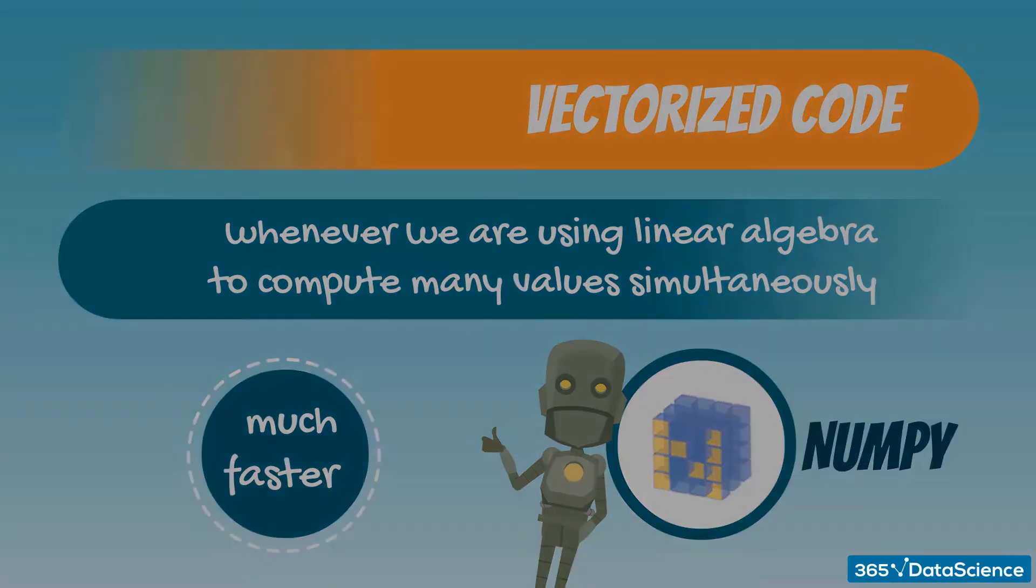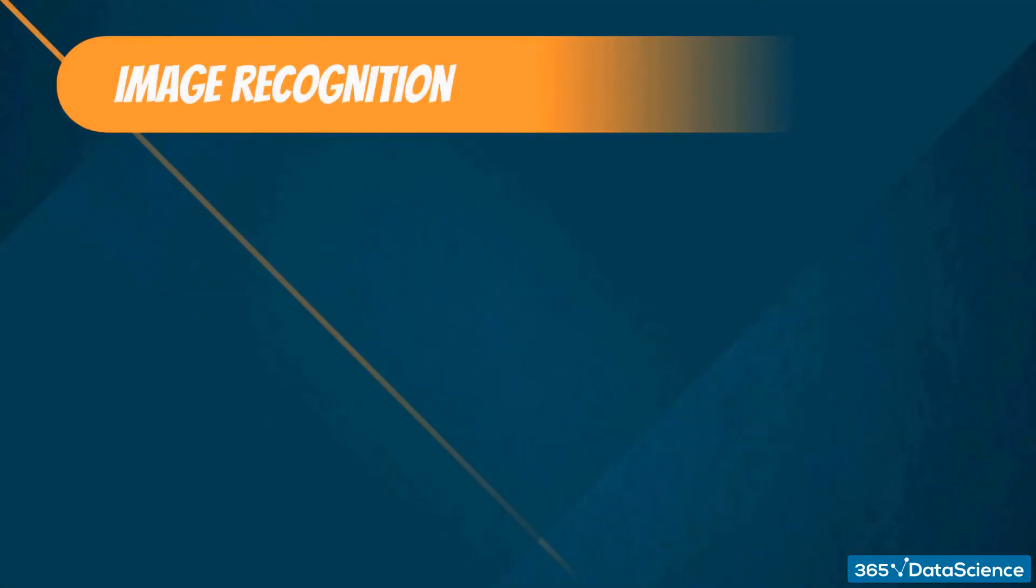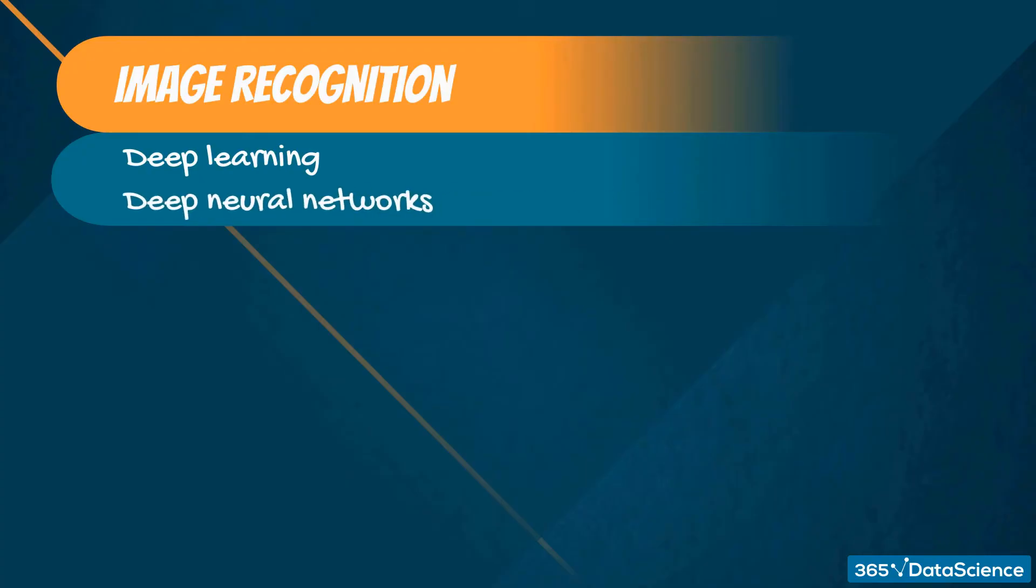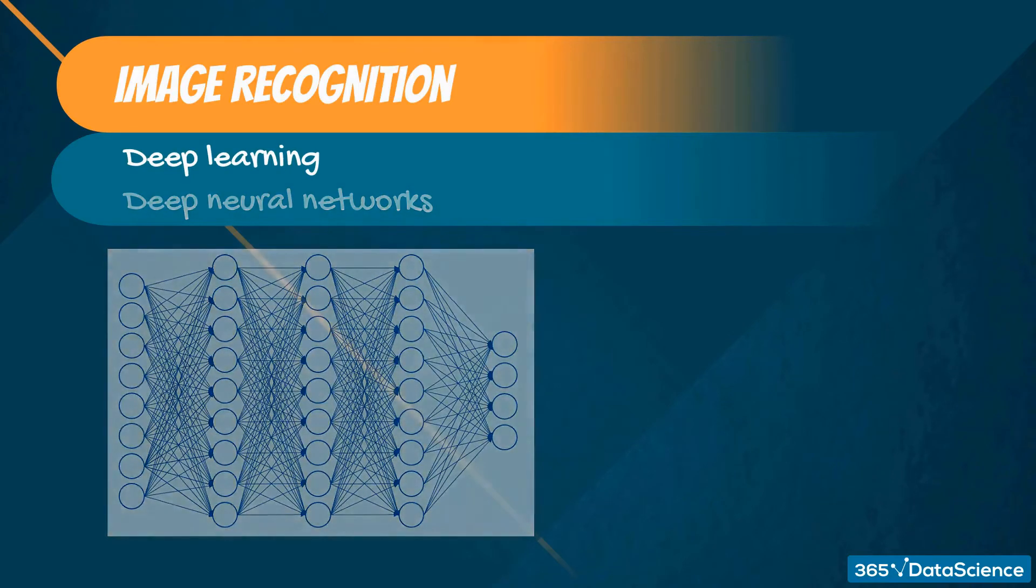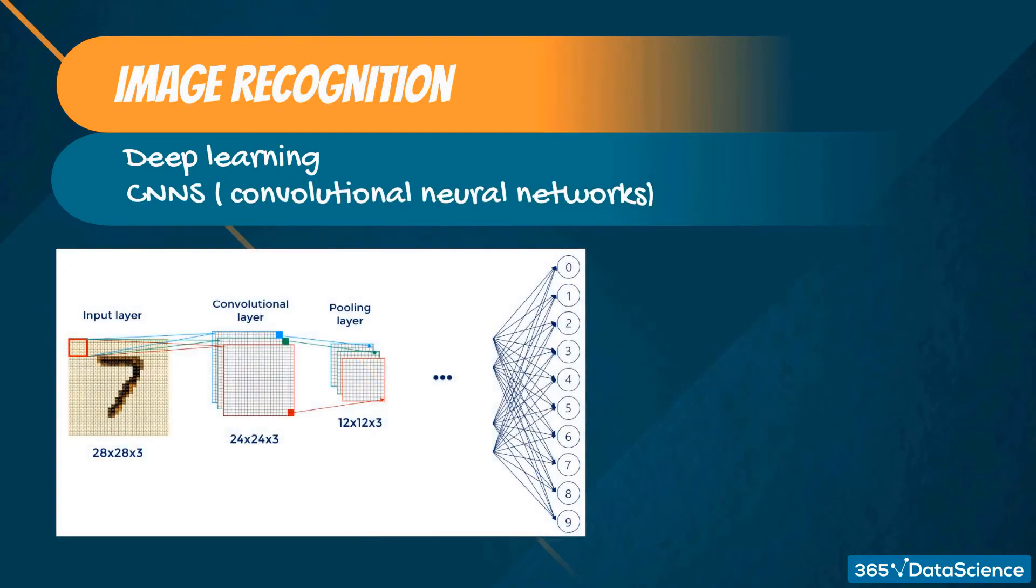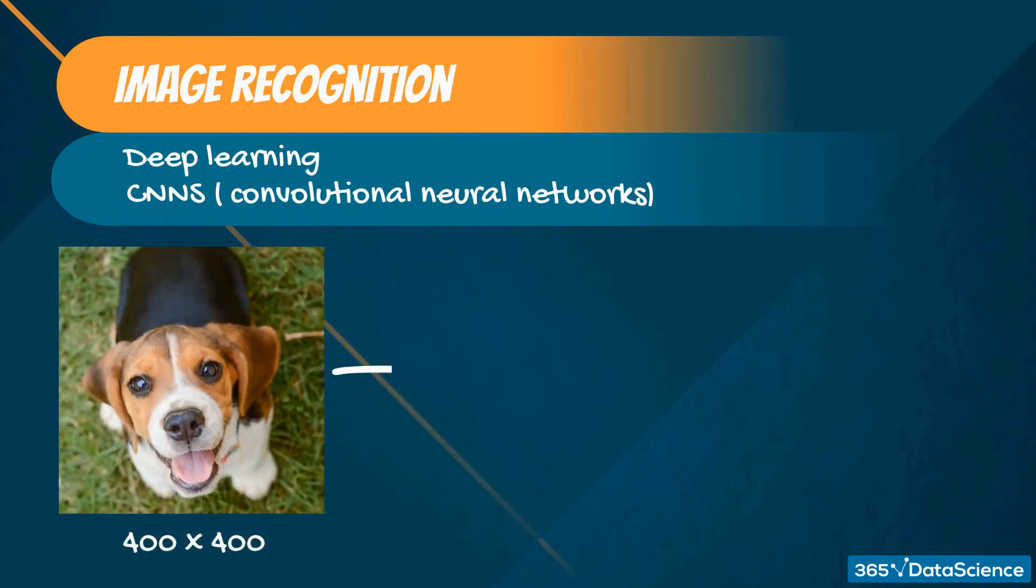What about image recognition? In the last few years, deep learning and deep neural networks in particular conquered image recognition. On the forefront are convolutional neural networks, or CNNs in short. What is the basic idea? You can take a photo, feed it to the algorithm, and classify it.